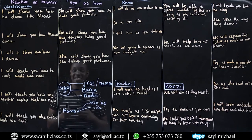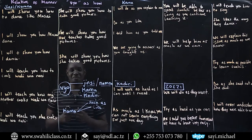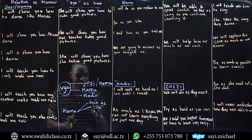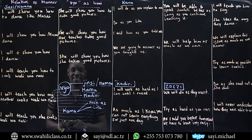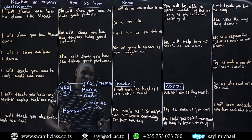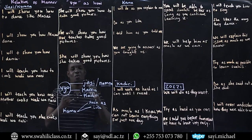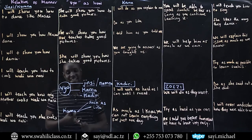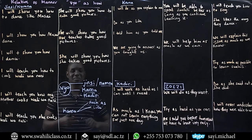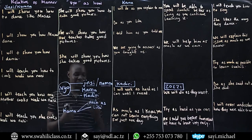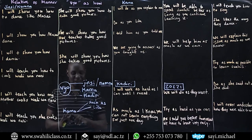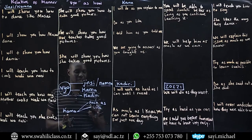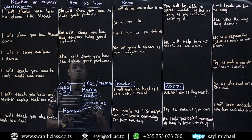Ninapenda sana chakula cha Africa — I like African food, such as kama: wali (that's rice), ugali, ndizi, mtori, nyama choma — chakula cha Africa. So kama can be like once you have two nouns, and kama can be such as once you have more than two nouns.